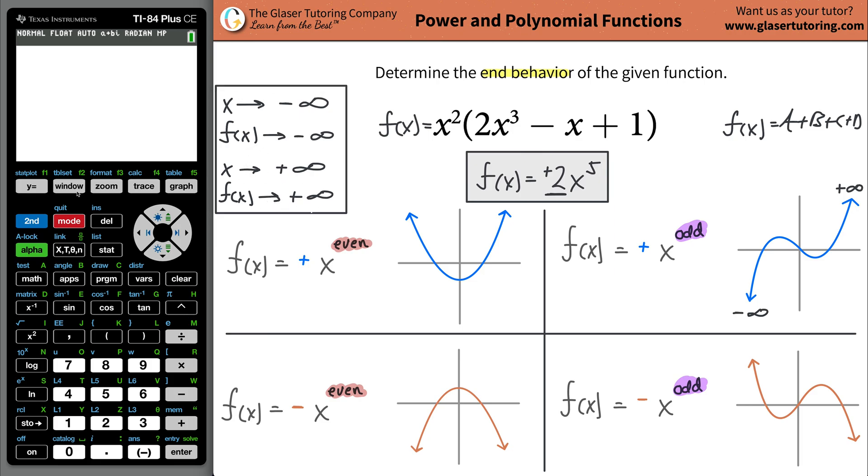Now, if you don't trust me still, use your calculator, plug it on in, plug in your function. Now, plug in the original function. Maybe we made a mistake somewhere. So just go back and plug in the original function. And if we didn't make a mistake, it should come out exactly as I suggested it should. So x squared, then open parenthesis. So 2x raised to the third. And you're going to bring that cursor back down, so hit the over button. Then minus x, and then plus one. Close your parenthesis. Now hit graph.